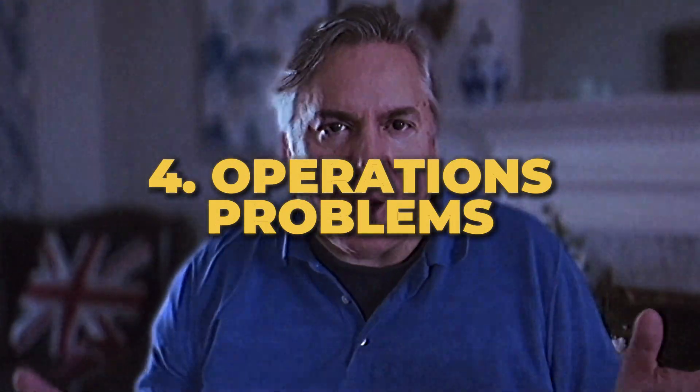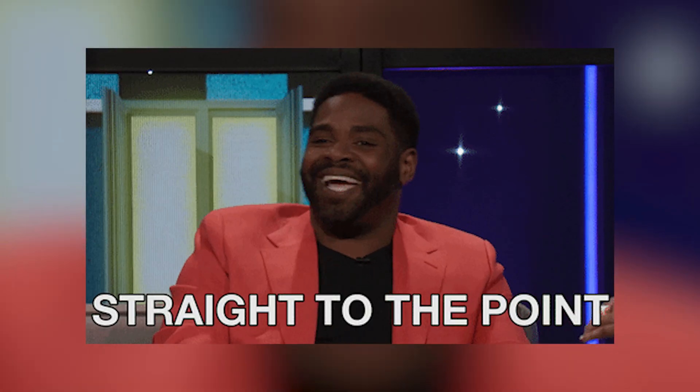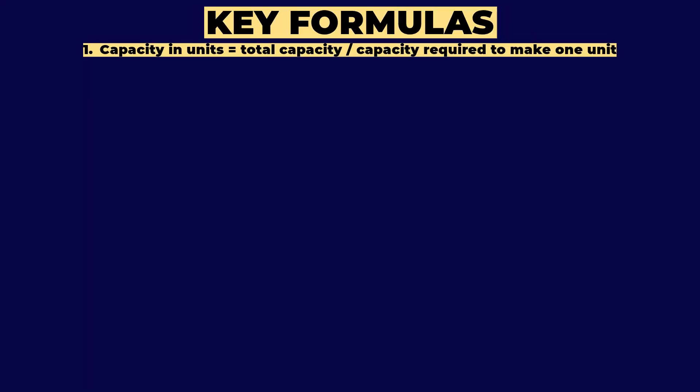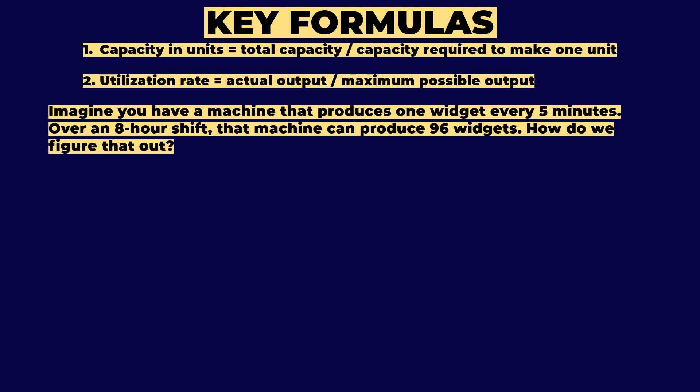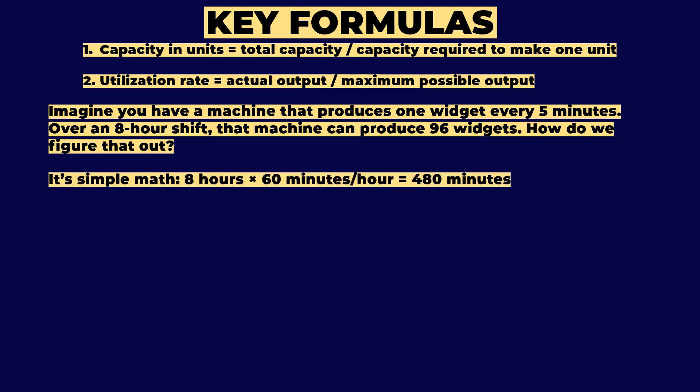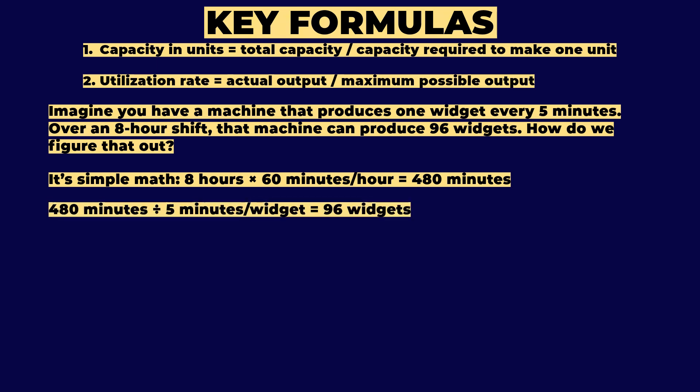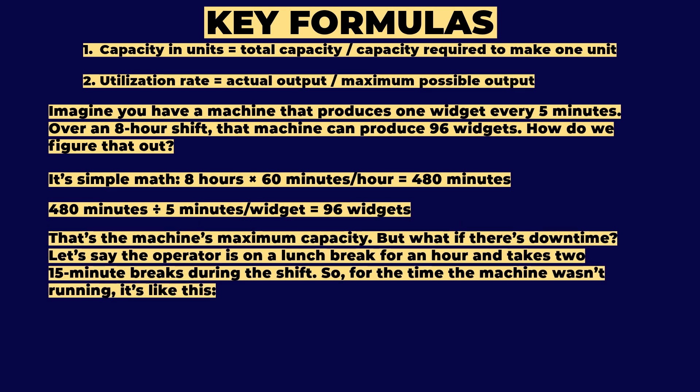Number four: operations problems. They're more straightforward than they might seem. You'll need to remember two key formulas: Capacity in Units = Total Capacity ÷ Capacity Required to Make One Unit, and Utilization Rate = Actual Output ÷ Maximum Possible Output. For example, a machine that produces one widget every five minutes over an eight-hour shift can produce 96 widgets — that's 8 hours × 60 minutes = 480 minutes, divided by 5 minutes per widget.